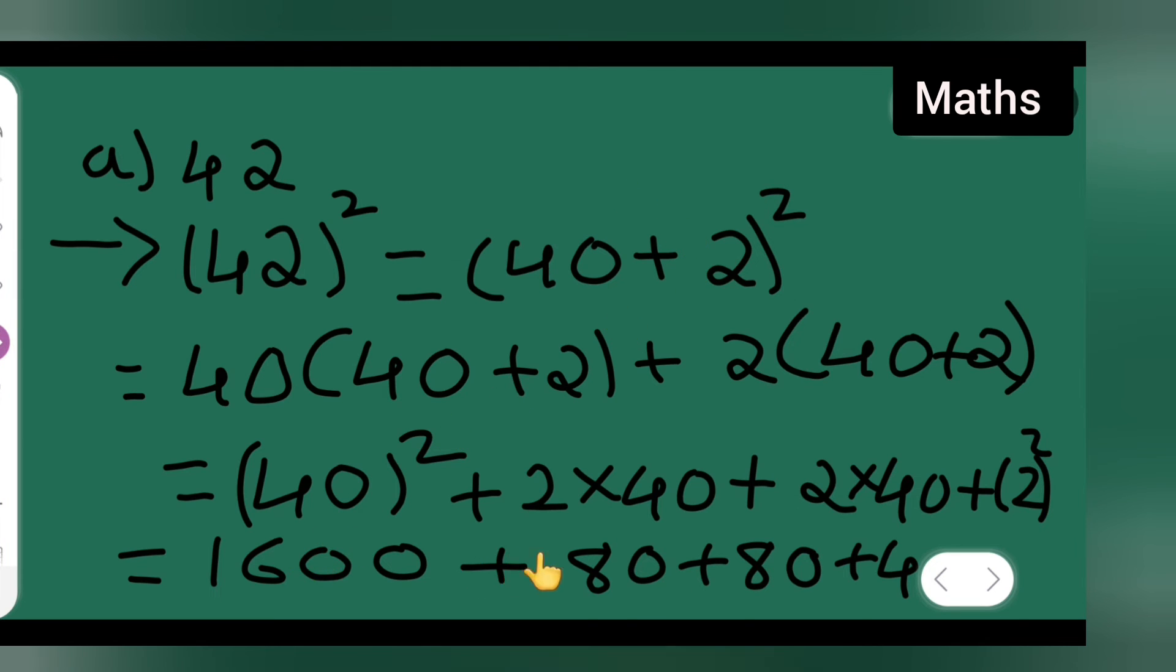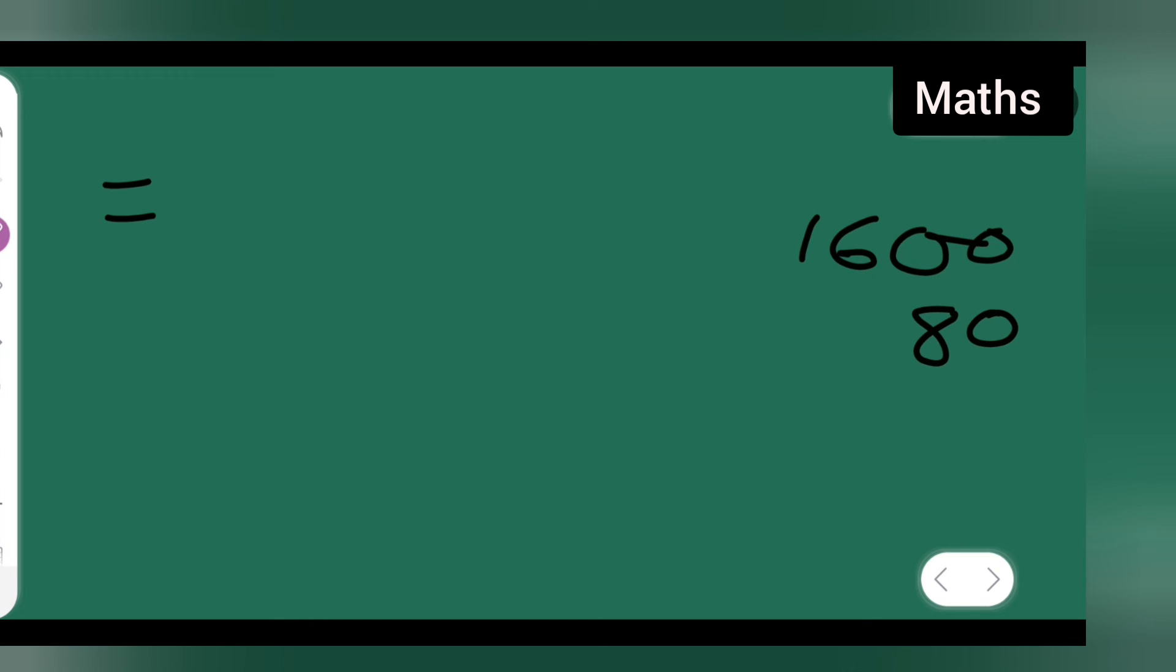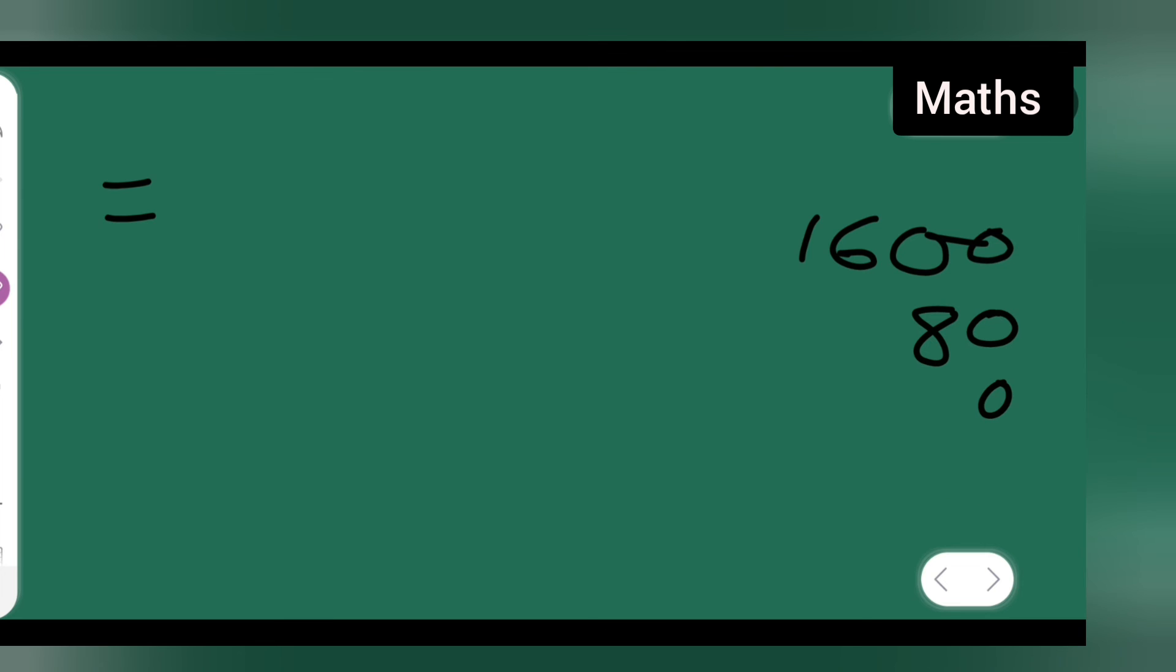Next thing, what you'll have to do is add all these numbers. 1600 plus 80 plus 80 plus 4. Let us see what you are getting. You are getting 4, plus 8 plus 8 will give you 16, so here it will be 7 and 1. So 1764 is the answer.